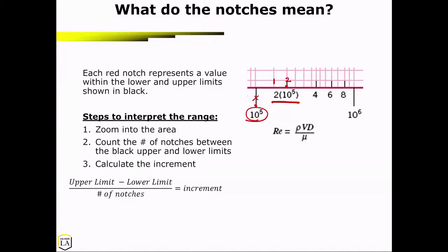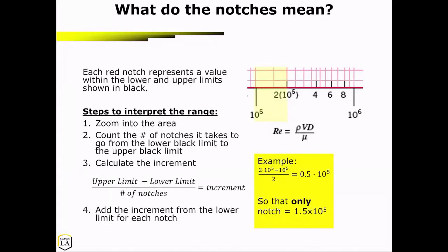So in this equation, you would subtract the upper limit, which is 2 times 10 to the 5, minus the lower limit, which is 10 to the 5th, divided by the number of notches, which gives you 0.5 times 10 to the 5th.